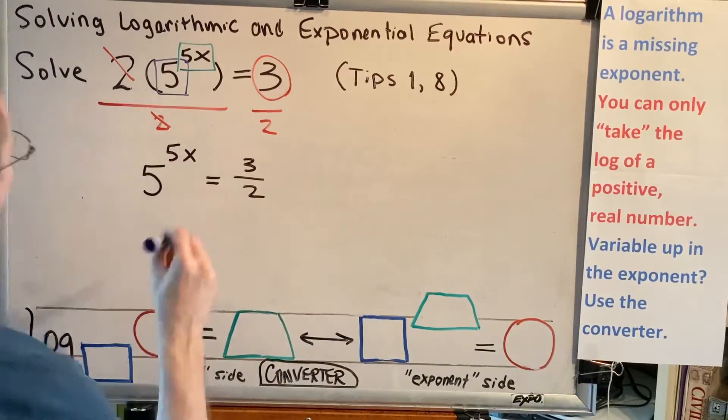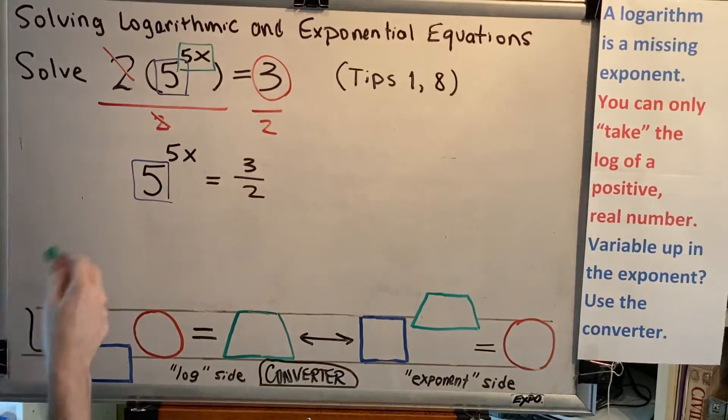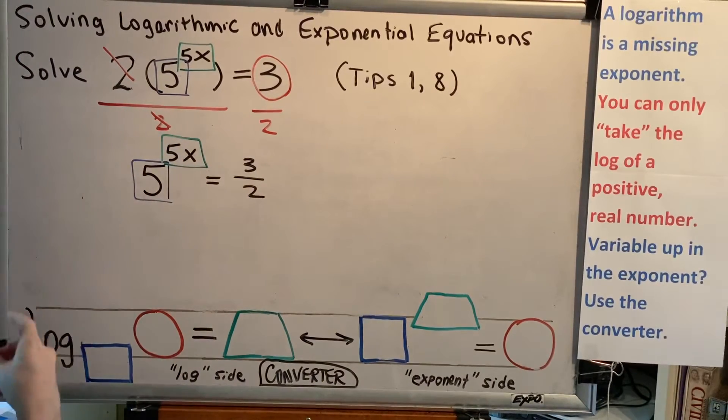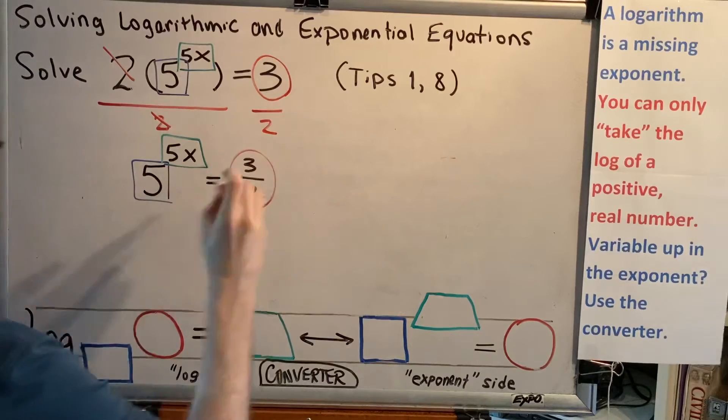This is perfect because now we have one of each of the three things that we need. We have a base, which is 5. We have an exponent, which is 5x. And we have an argument, which is 3 halves.